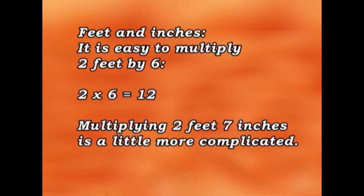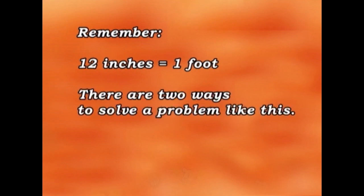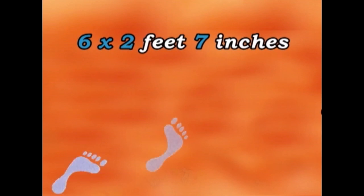Multiplying two feet seven inches is a little more complicated. Now remember, twelve inches make one foot. There are two ways to solve a problem like this. This is the first way. This is the problem: six times two feet seven inches.